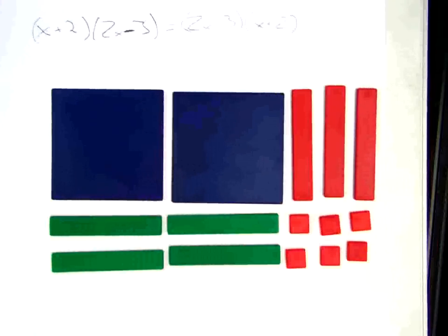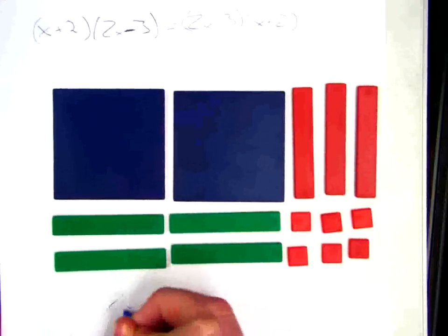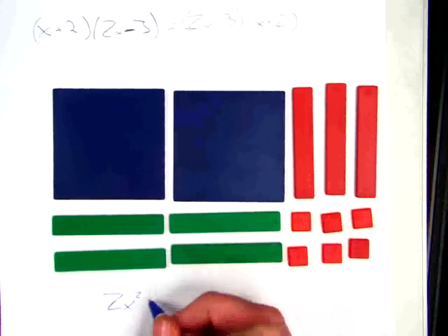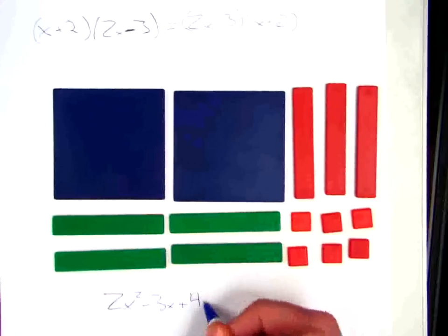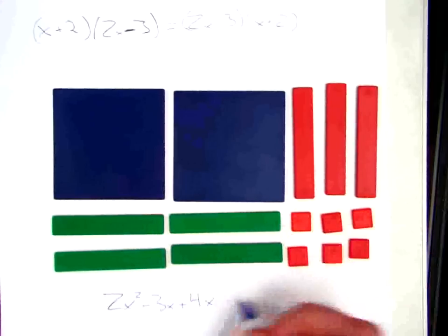I have 2x squared minus 3x plus 4x minus 6.